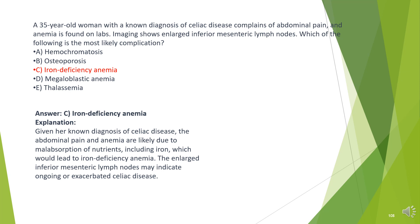The answer is C. Iron deficiency anemia. Given her known diagnosis of celiac disease, the abdominal pain and anemia are likely due to malabsorption of nutrients, including iron, which would lead to iron deficiency anemia. The enlarged inferior mesenteric lymph nodes may indicate ongoing or exacerbated celiac disease.